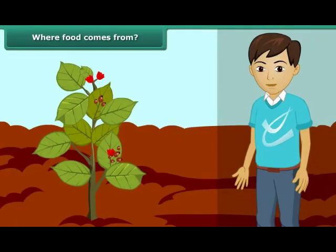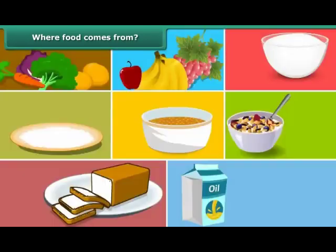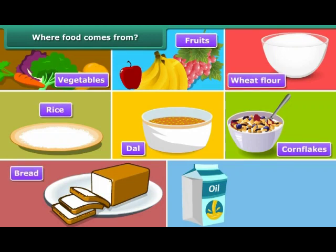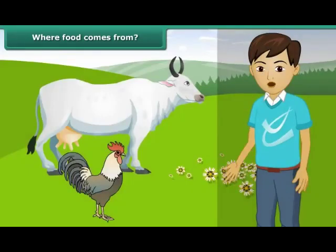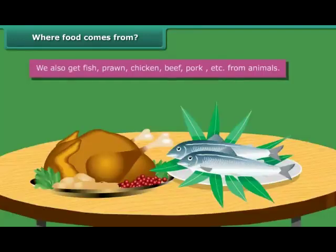Where does food come from? Let us now discuss where we get the various food items to eat. Most of the food we get from plants like vegetables, fruits, wheat flour, rice, dal, cornflakes, bread, vegetable oil, etc. Some food we also get from animals like milk, curd, butter, ghee, eggs, etc. We also get fish, prawn, chicken, beef, pork, etc. from animals.